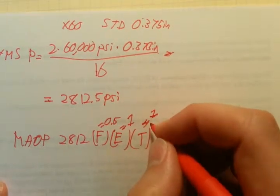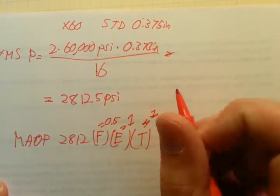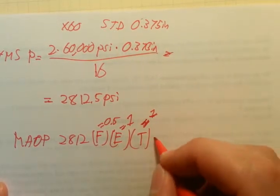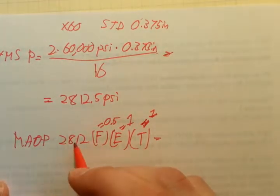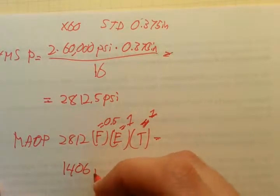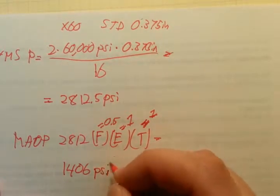Most of the time, unless you're dealing with process pipe, it's pretty safe to assume that's just going to be one. So we're basically just dividing by five this 2812, which gives us 1406 PSI rounded.